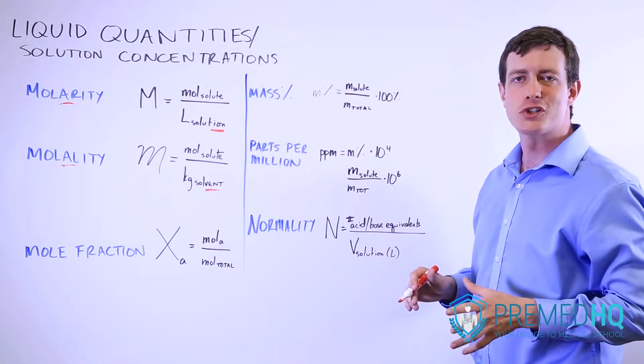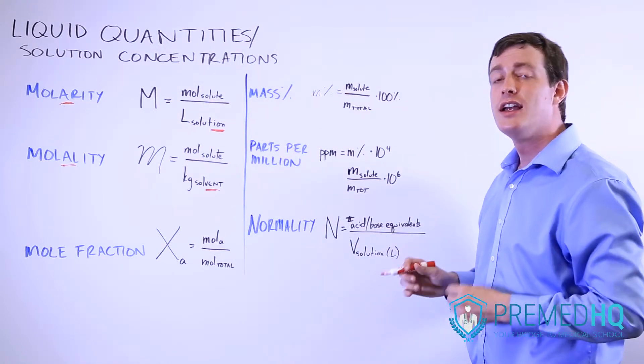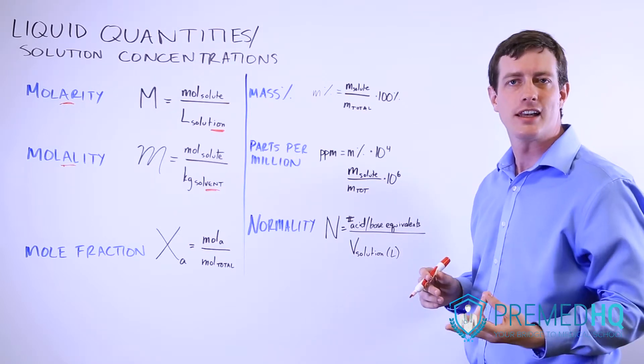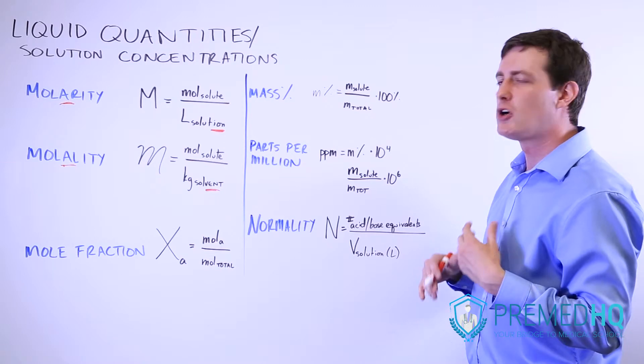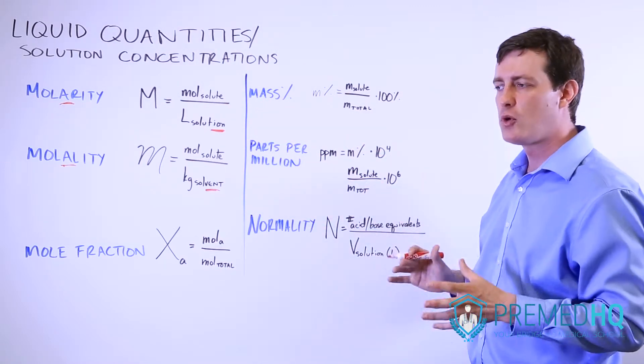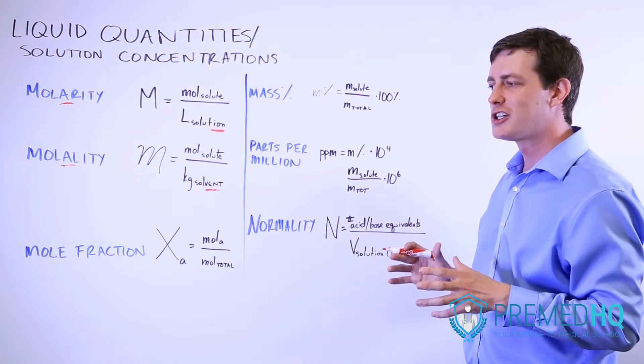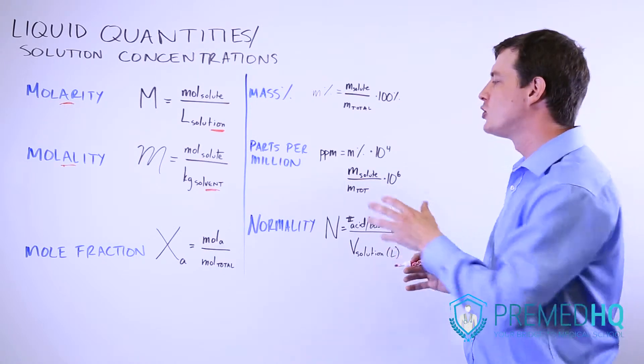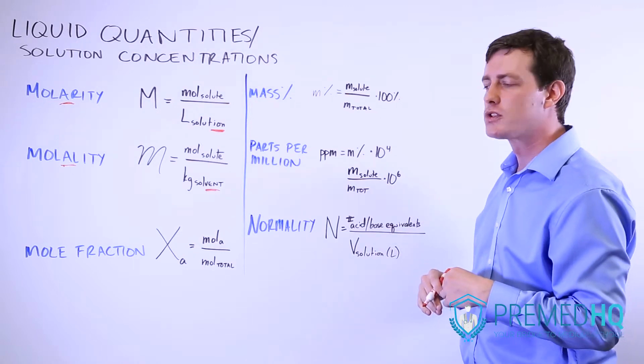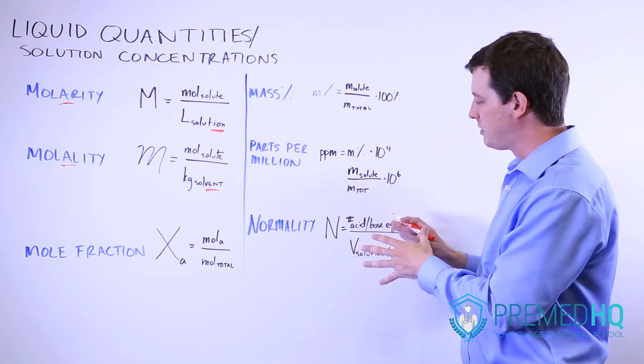If you have a one molar solution of H2SO4, that's a diprotic acid which means that it has two protons that it can give up. And so you would multiply it by two in order to go from molarity to normality. So if you have one molar solution of H2SO4, that has a normality of two because it can yield two moles of H+ particles.